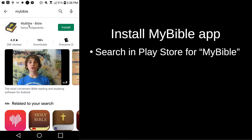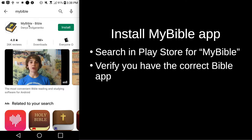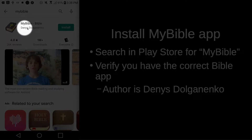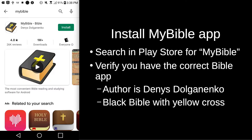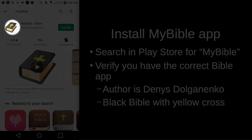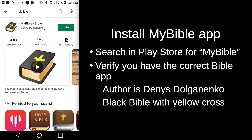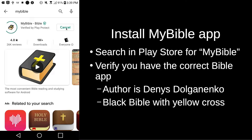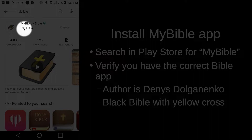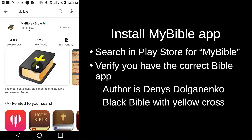There are lots of Bible apps on the Google Play Store, so one of the things we want to do is verify that we have the correct Bible app. The first step for verifying is to make sure that the author you find right here is Dennis Dolganeko. The other thing you want to verify is that this icon here is a black Bible with a yellow cross. Once you have verified these things and made sure you have the right app, you can just tap on Install. Then you should see the spinning circle along with the percentage of how much is being downloaded, and hopefully it's going to say Installing on your phone. In a few minutes, you should have the Bible app installed.